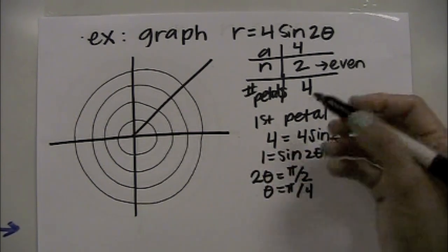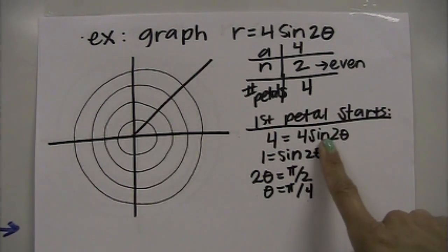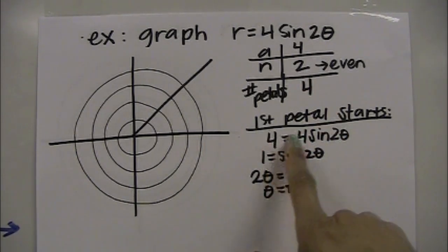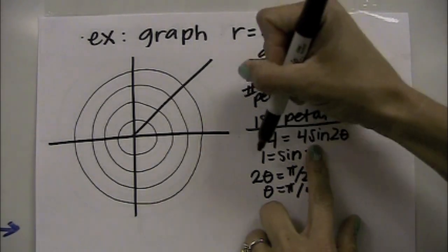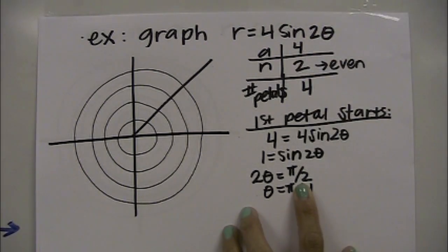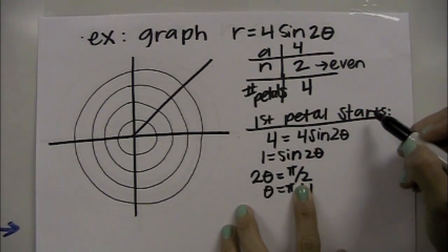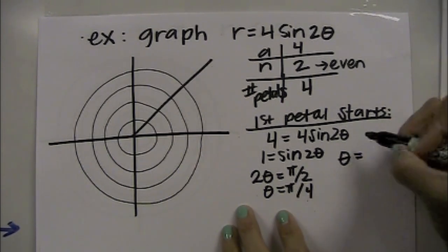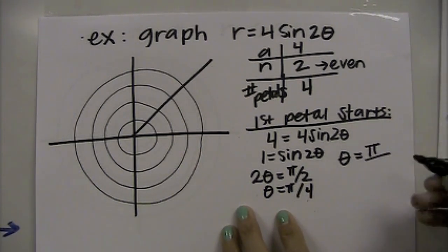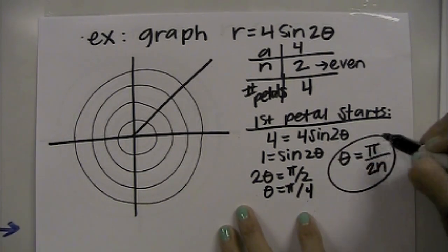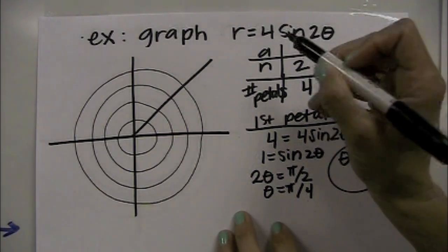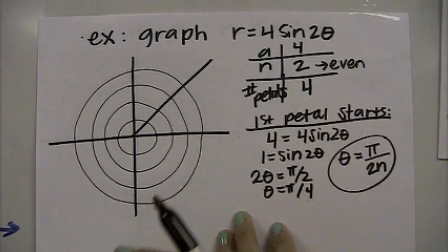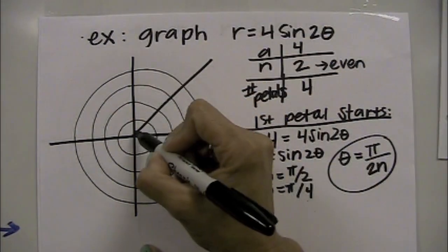If you work this out every time for a sine graph, taking the a value and plugging it in for r always gives you 1 equals sine of something, and you're always asking sine of what angle equals 1, which is always π/2. So the first petal for sine rose curves always starts at θ equals π over 2n. You can use this formula as a shortcut. A, which is 4, is the length of the petal, so at π/4 the petal extends out 4 units.